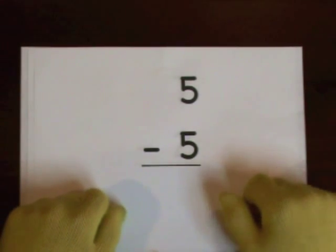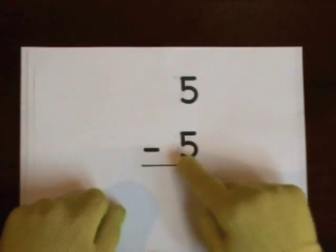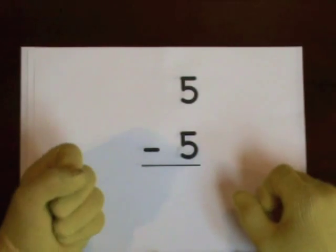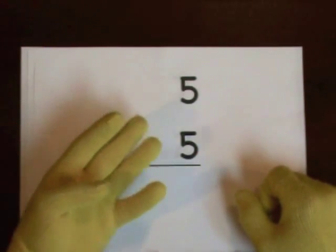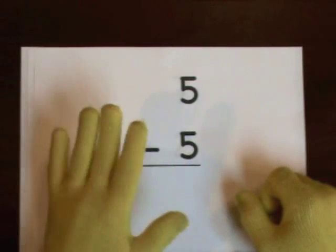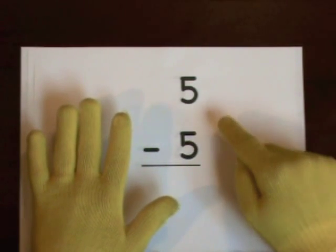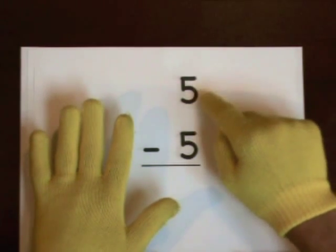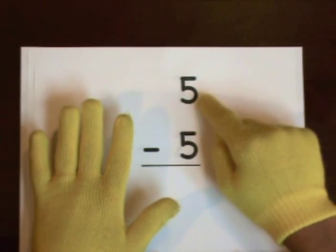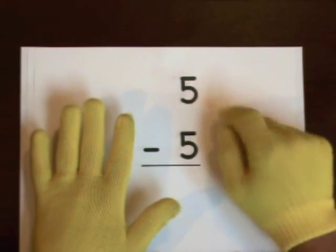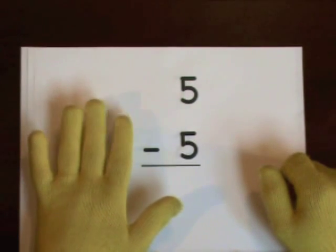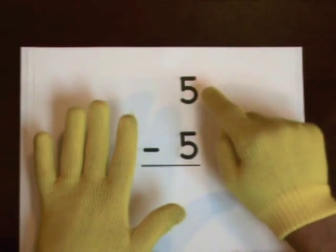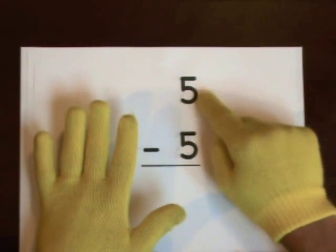Next step. 5 minus 5. Start at 5, do this 5 on our fingers. 1, 2, 3, 4, 5. That's how many we'll take away. I'll start at 10 and count down to 5. You count the rest of the way. 10, 9, 8, 7, 6, 5. Again, 10, 9, 8, 7, 6, 5.